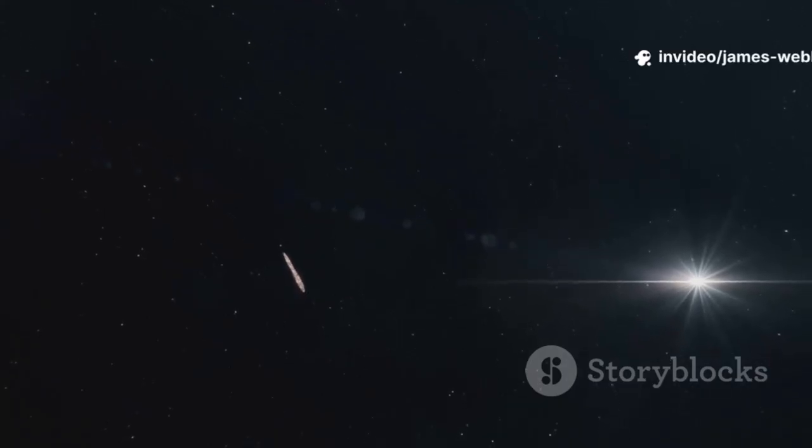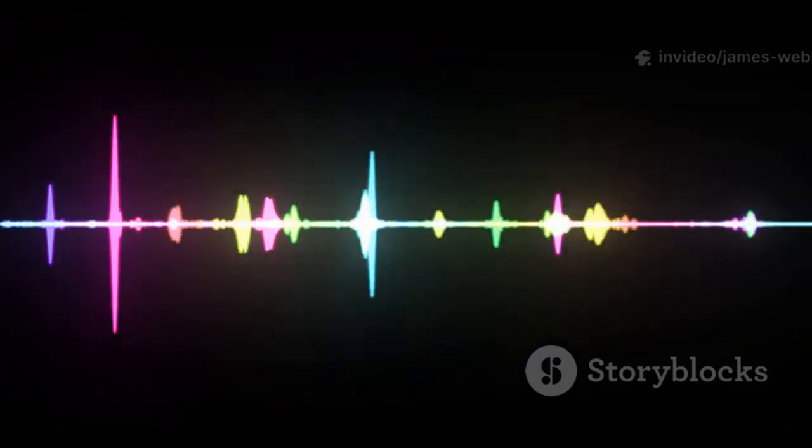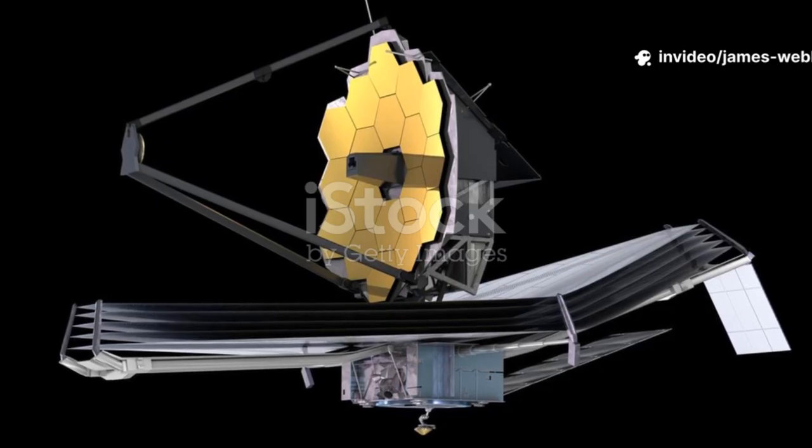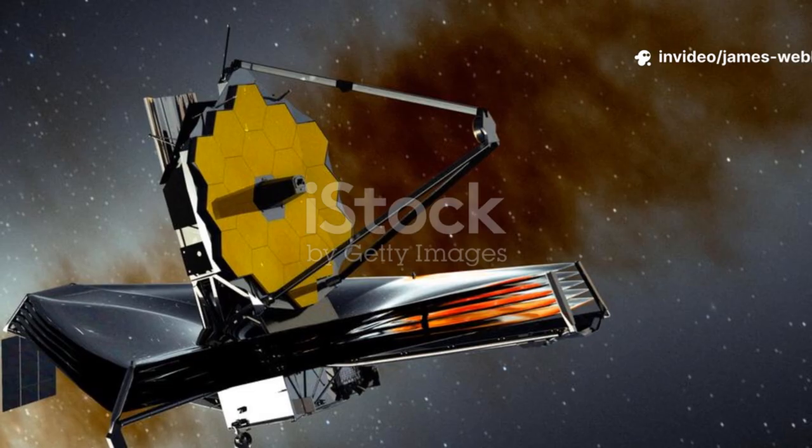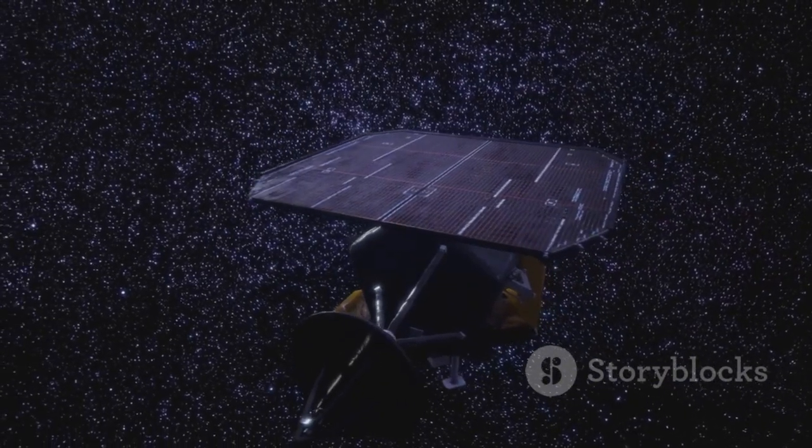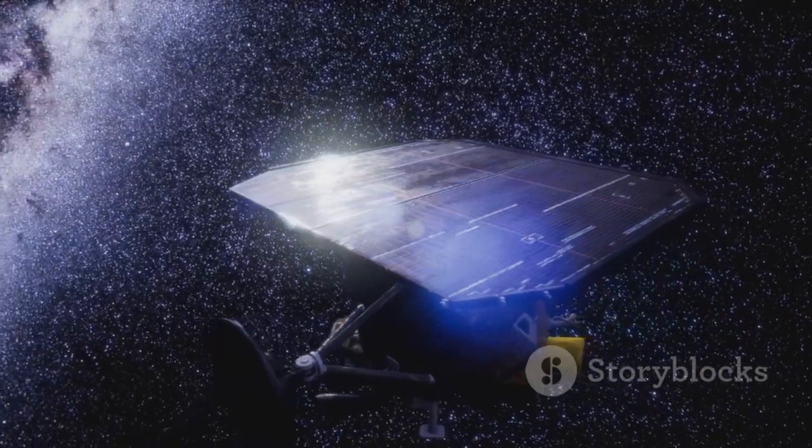When 3I Atlas came into view, the JWST was the perfect tool for the job. Its instruments could analyze the faint light reflecting off the object's surface, breaking it down to read its chemical signature. The telescope swiveled its golden gaze towards the interstellar visitor. With unparalleled precision, it locked onto the faint pinpoint of light. The data began to stream back to Earth, a torrent of information that scientists eagerly began to decode.